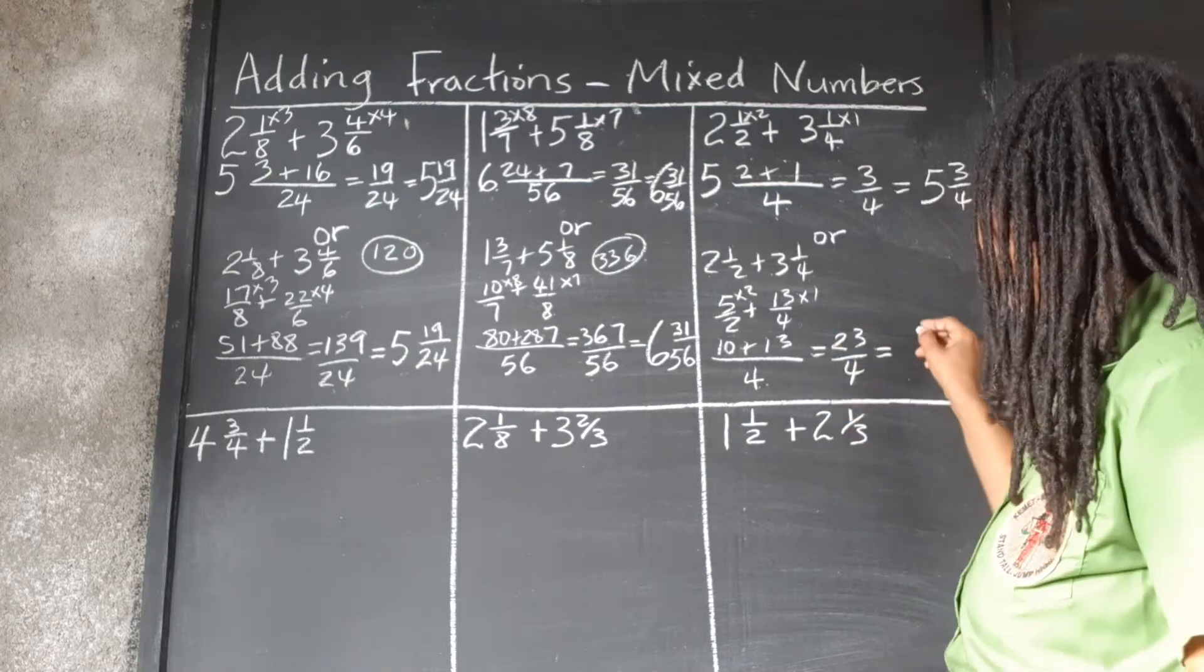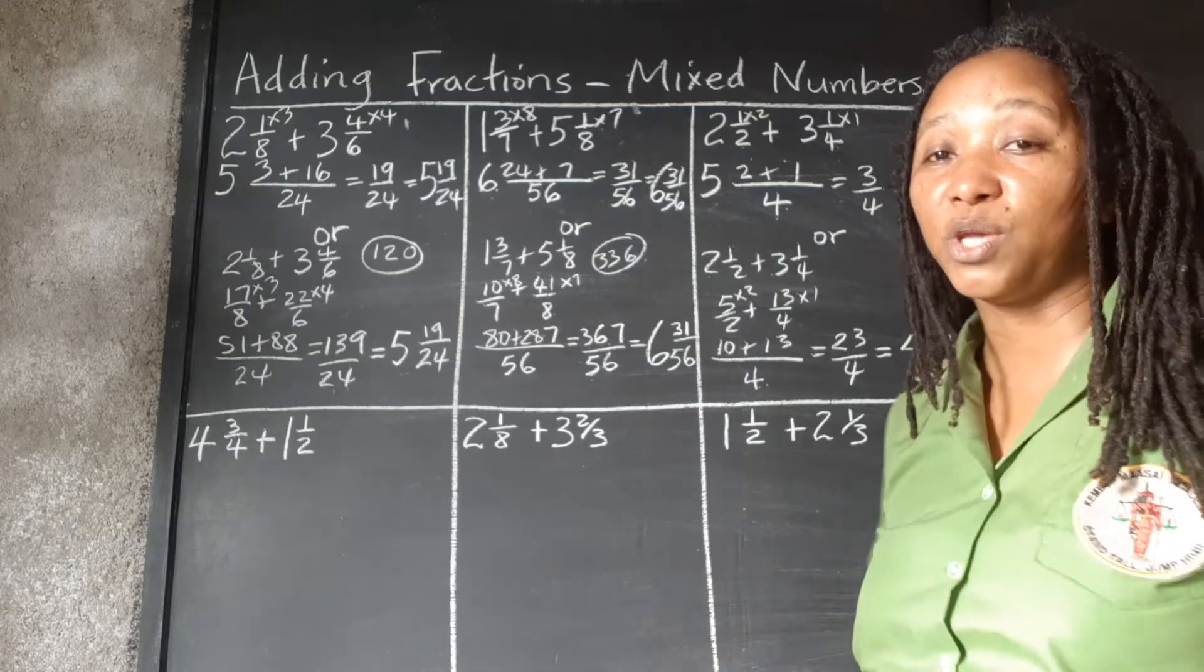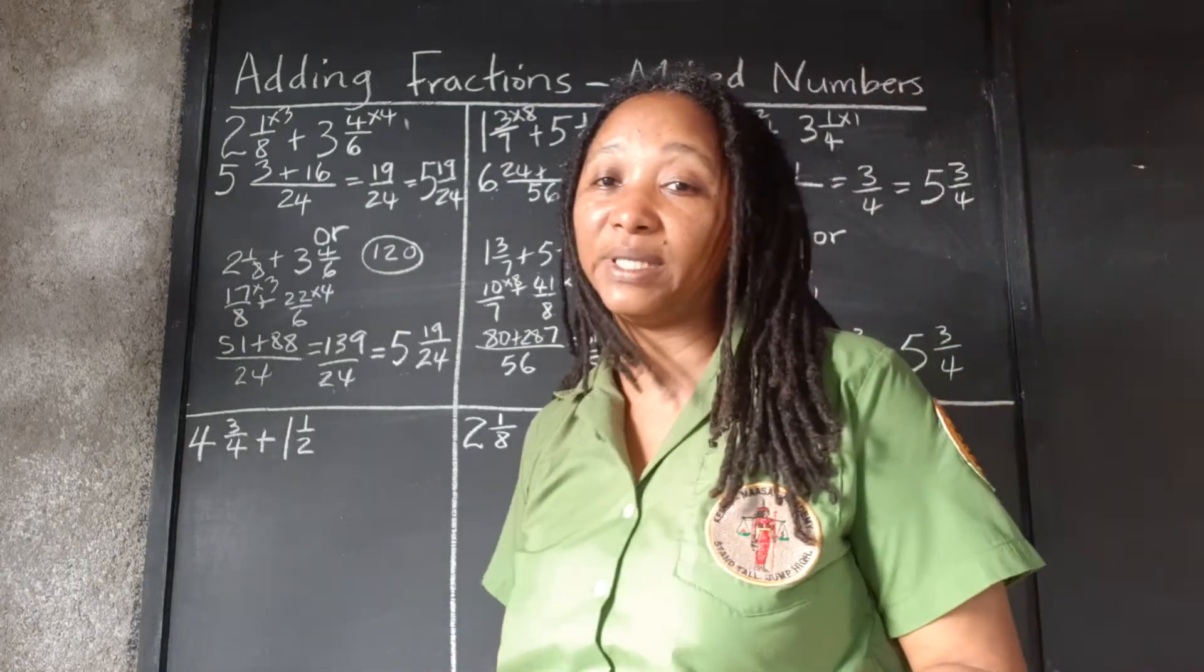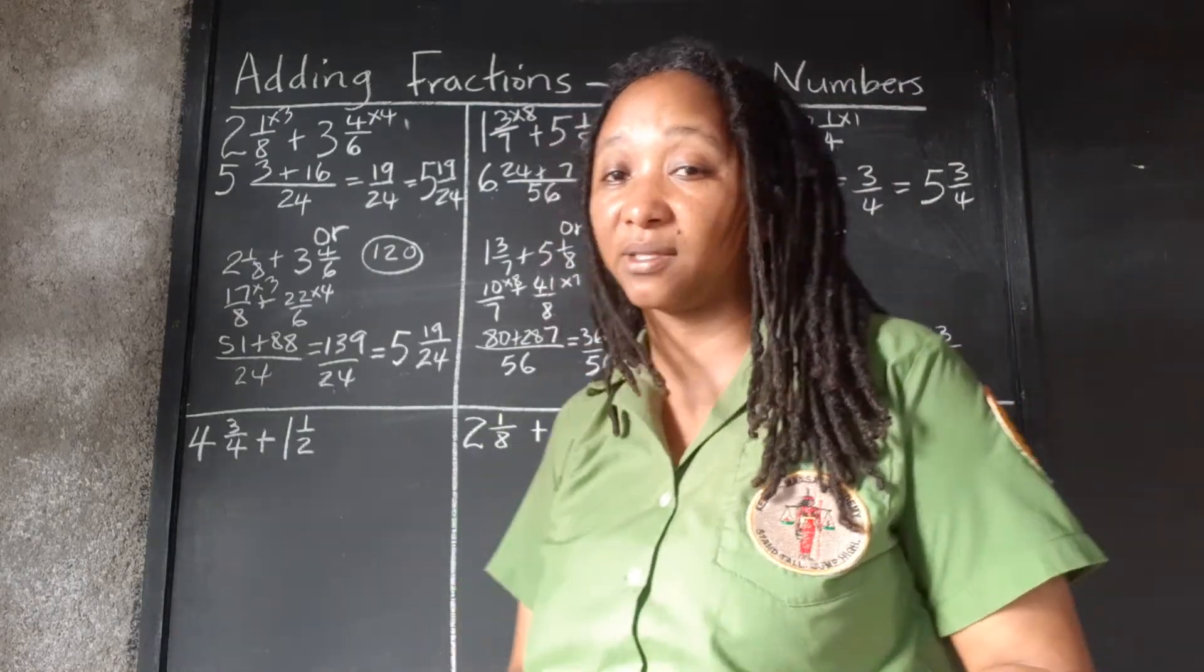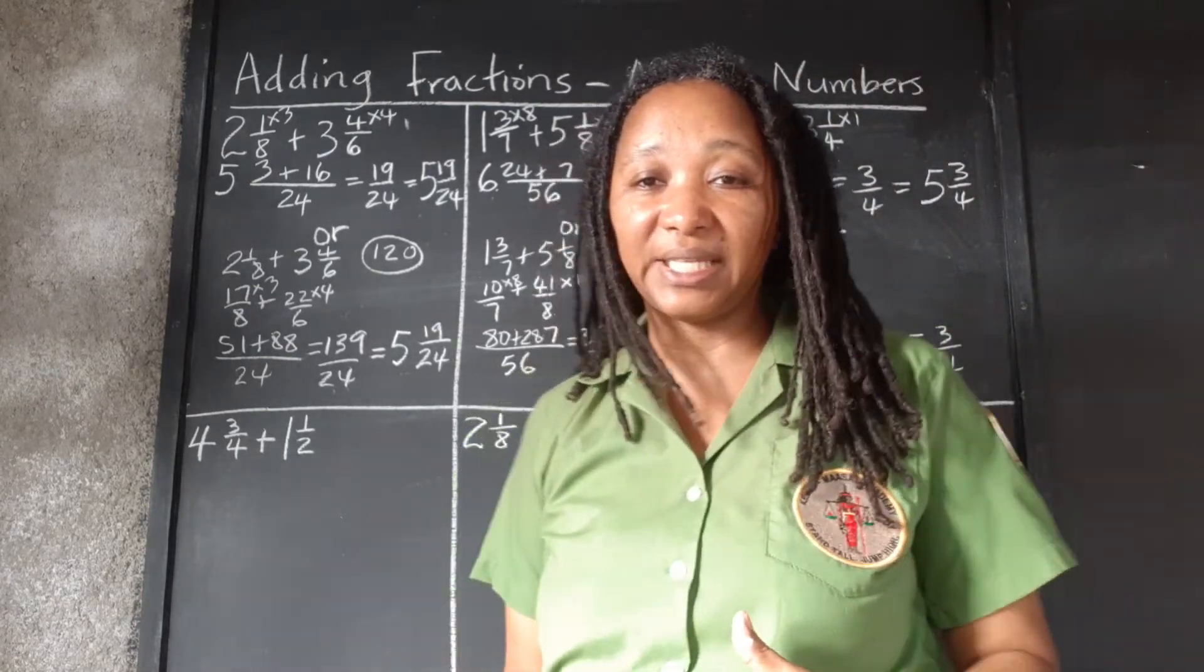And we end up with 23 over 4. 4 goes into 23 5 times, remainder 3 over 4. So whichever method we use, we should get our same answer. We should get the same answer.